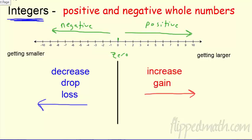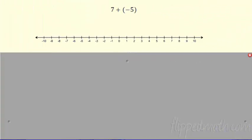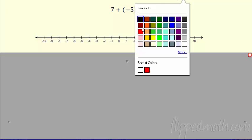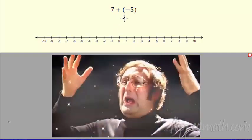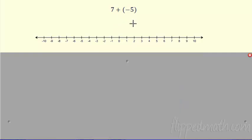Now that we know what they are, let's go ahead and actually start to add them. So what I would like to do here is model what's going on. We're going to model it on the number line. You may already know this answer — in fact, this is the mind-blowing one from the picture. I'm adding seven plus negative five.